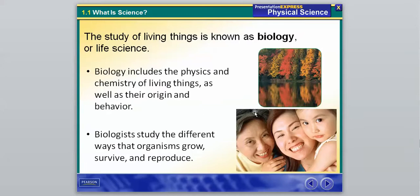And then the last branch, the study of living things, which is known as biology or life science. And biology includes the physics and chemistry of living things, as well as their origin and behavior. So the things that we are going to learn within physical science this year are going to apply to biology next year. There is actually a lot of physical science that goes into the living things. And then biologists also study the different ways that organisms grow, survive, and reproduce, which is a little bit outside of the realm of this class. But you'll have plenty of time to take that class with me next year.